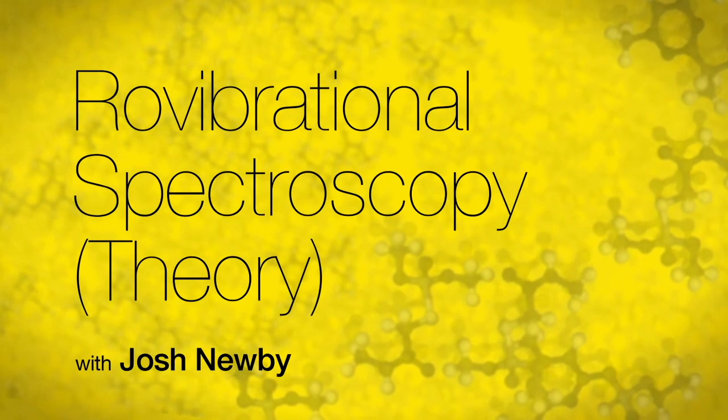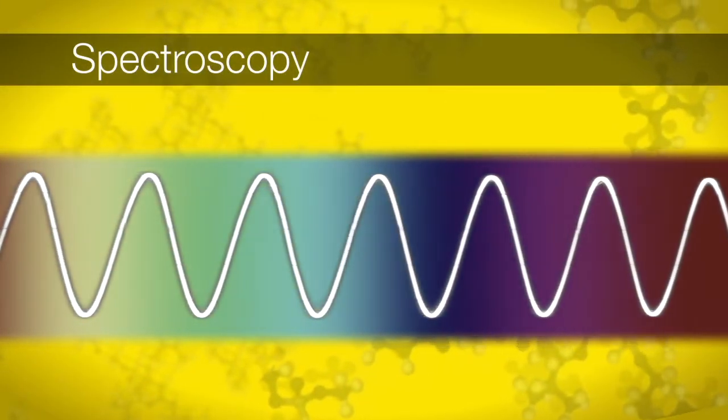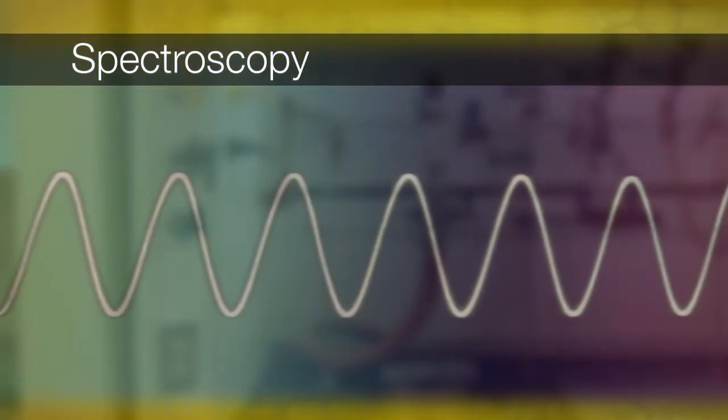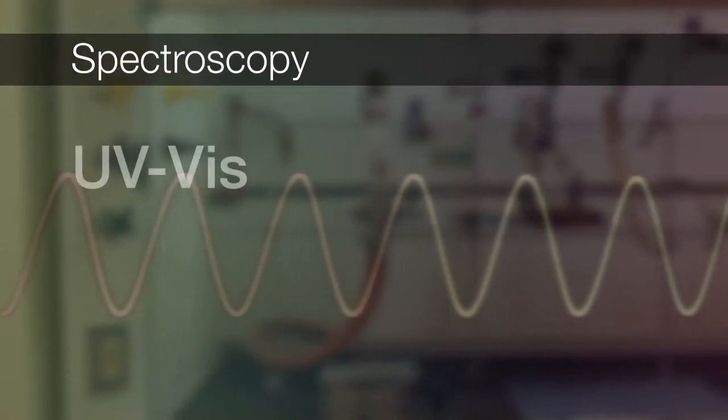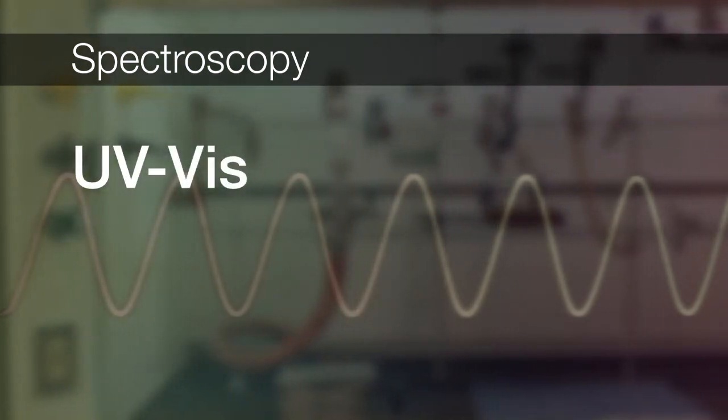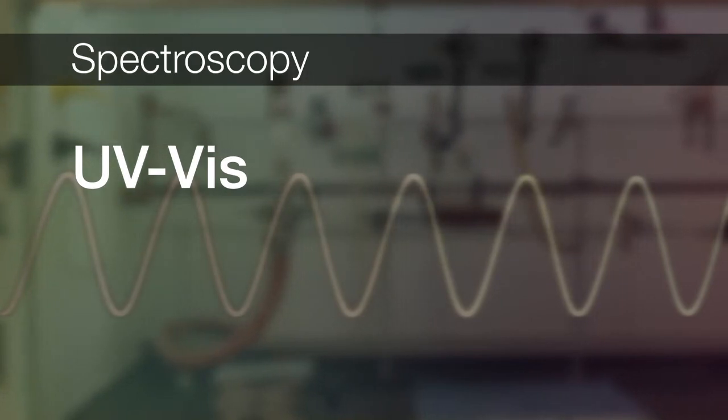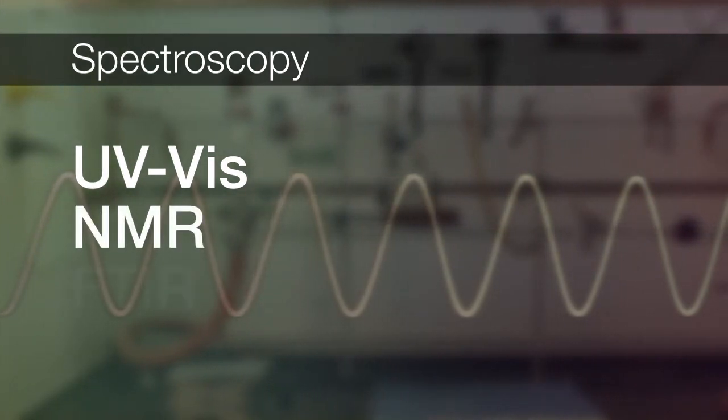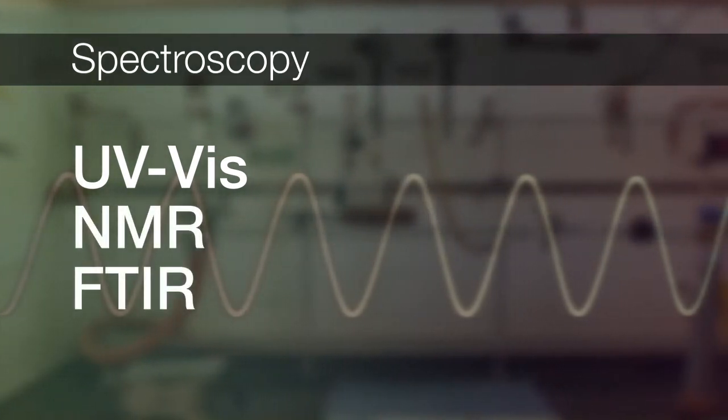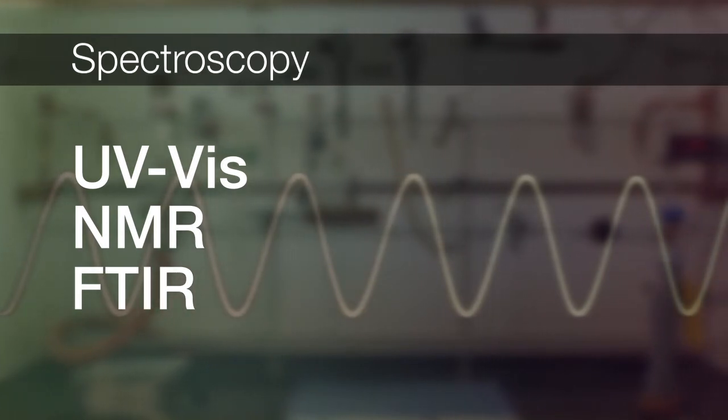Let's talk about spectroscopy. Chemists use spectroscopy for a variety of purposes. In general chemistry, we used UV-Vis spectroscopy to learn about the light-absorbing nature of chemicals. In organic chemistry, we used NMR and FTIR to derive structural information of compounds.